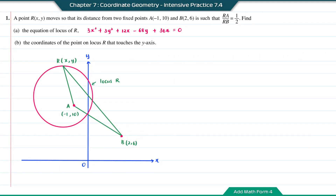Question B: find the coordinates of the points on the locus R that touch the y-axis. This refers to the intersection point between the locus R and the y-axis. For any point that lies on the y-axis, the x-coordinate is equal to 0. To find the y-coordinate, we're going to substitute x equals 0 into the equation of the locus of R.